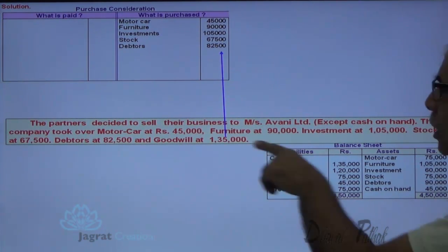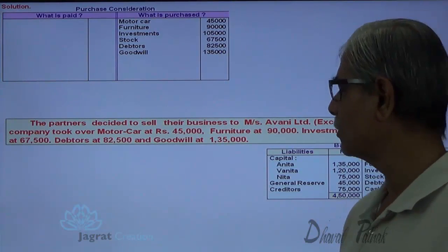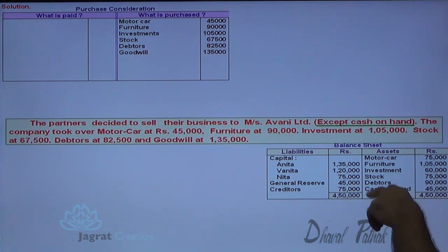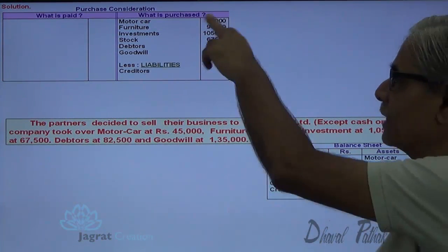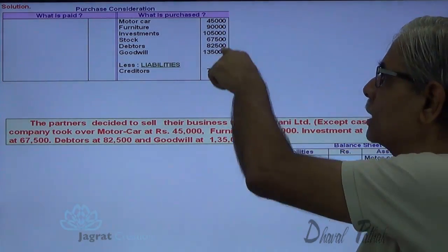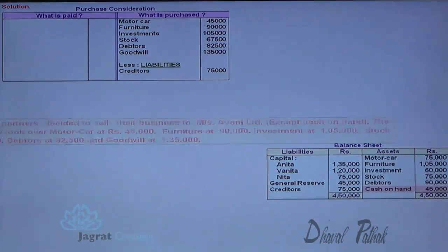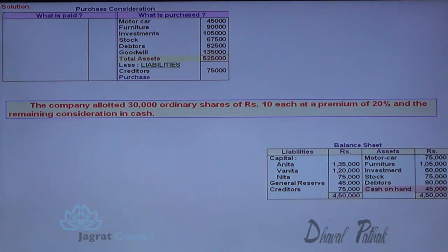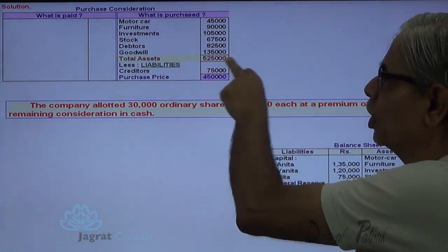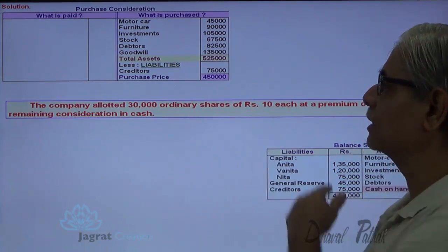Cash balance is not sold. The company paid goodwill price of 1,35,000. Creditors are also sold — business is made of assets and liabilities, so creditors are given to the company. This is the total of assets minus liabilities — the value at which the net assets are sold. Total assets 5,25,000 minus creditors 75,000 gives net assets of 4,50,000, which is the purchase price worked out on the basis of net assets.